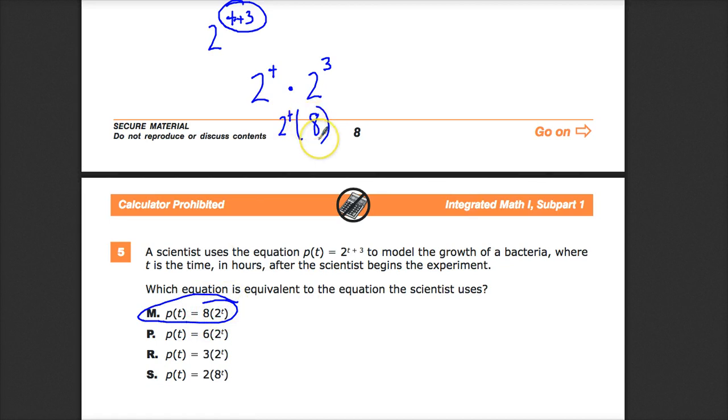See how they're in a different order? The thing about multiplication is it's commutative. So, I can just commute over here, and now it's 8 times 2 to the T. As long as you have them in a multiply relationship, you can put them in whatever order that you want.